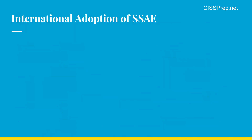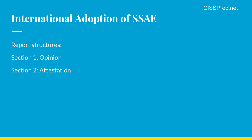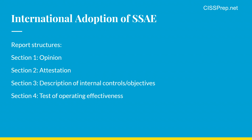SSAE stands for Statement on Standards for Attestation Engagements, and the common body of knowledge covers iterations 16 and 18. The main thing to be aware of is how the sections are organized in both standards. Section 1 has the service auditor's independent report, also known as the opinion. Section 2 has the written attestation or assertion of the control by the service organization. Section 3 describes the internal controls and control objectives by the service organization. Section 4 has the service auditor's information including the test of operating effectiveness. Section 5 has any additional information the service organization needs to supply — anything that was missing during the audit.